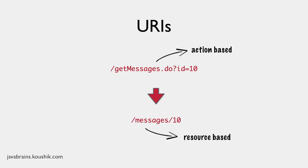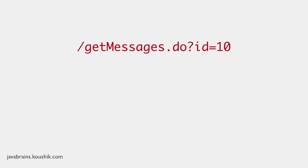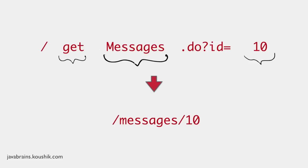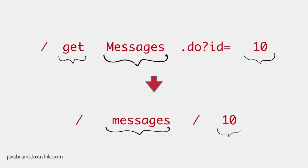But here's the problem. Look at the URI getMessages.do?id=10 — it has three pieces of information in it. One, it refers to messages. Two, it refers to ID 10. And three, it gets that information, as mentioned in the 'getMessages' snippet of the URI. Now look at /messages/10. It has the resource and the ID, but this URI doesn't have the third piece of information — it doesn't say it's actually getting message ID 10.